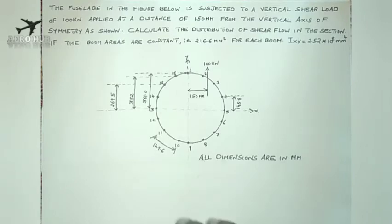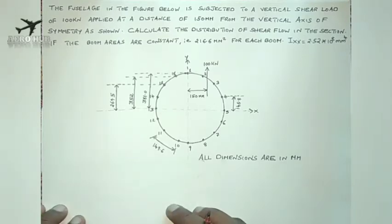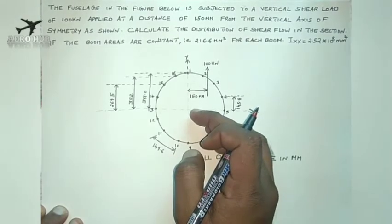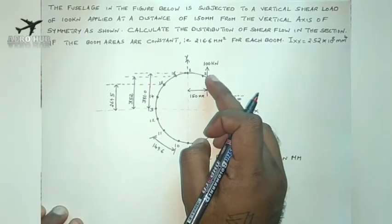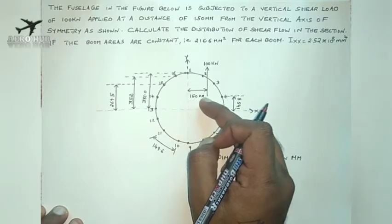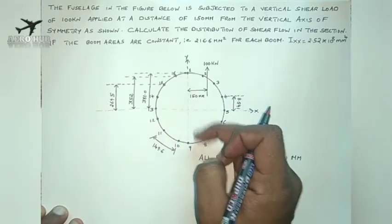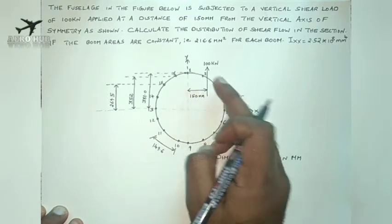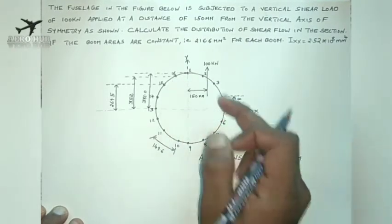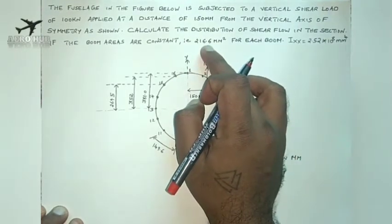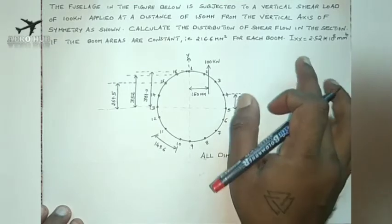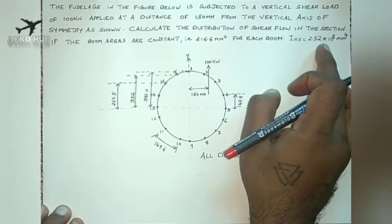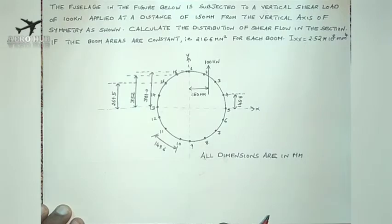We will be continuing the same question which we have done for the bending stress in the previous lecture. We are using the same diagram. We have a fuselage frame in circular shape and I am applying a load of 100 kN at a distance of 150 mm from the vertical axis of symmetry. We have 16 boom areas from 1 to 16, and each boom area is 216.6 mm squared. The moment of inertia IXX is equal to 2.52 into 10 power 8 mm power 4.